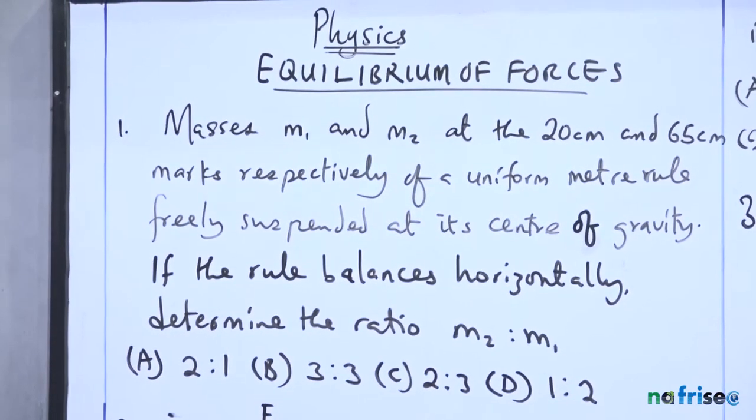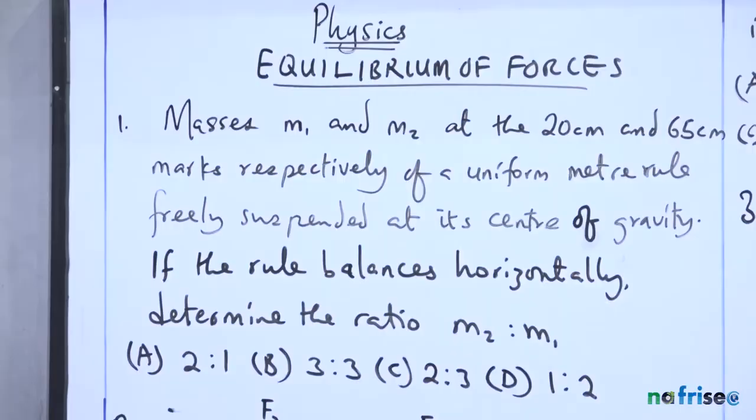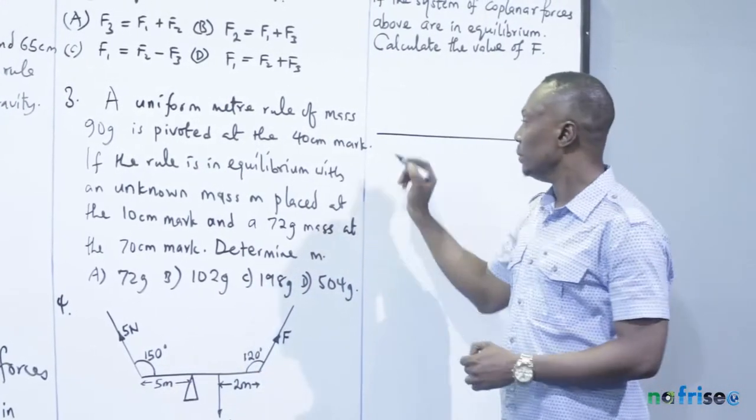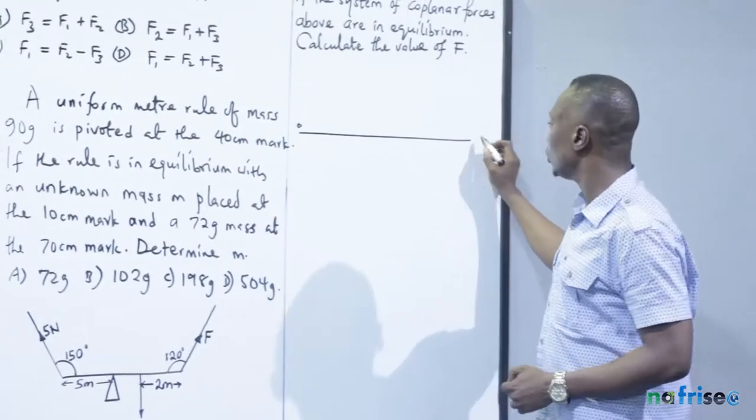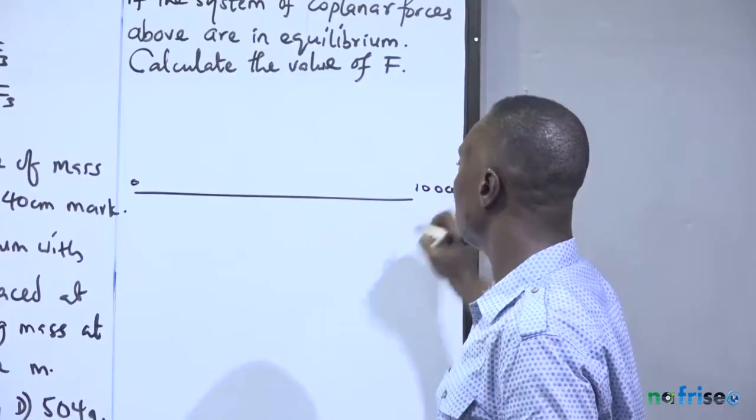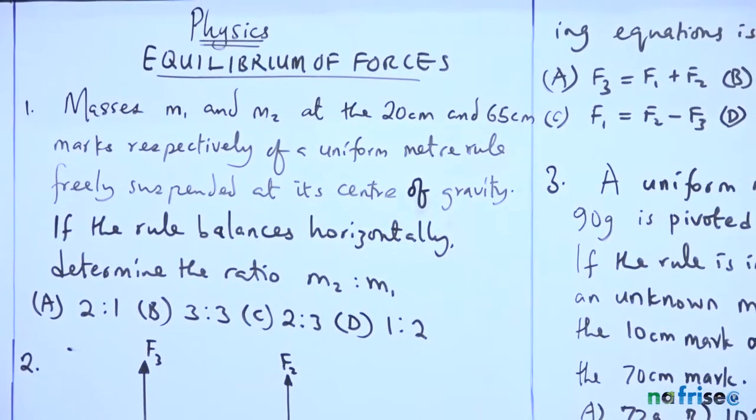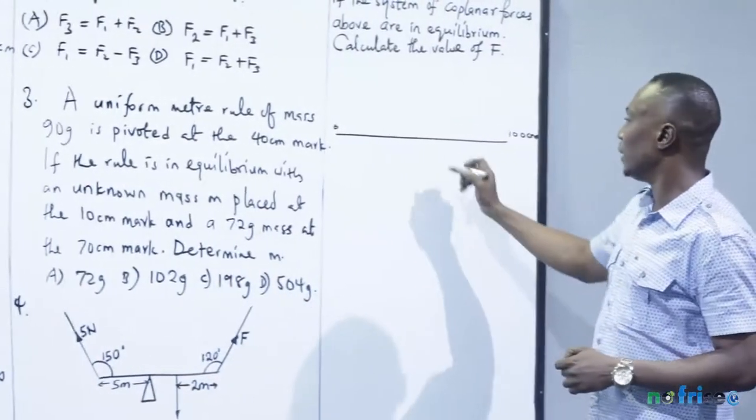If the ruler is freely suspended at its center of gravity and balances horizontally, determine the ratio M2 to M1. What we do is make a sketch of a meter ruler calibrated from 0 to 100 centimeters. The center of gravity for a uniform meter ruler should be at 50 centimeters.